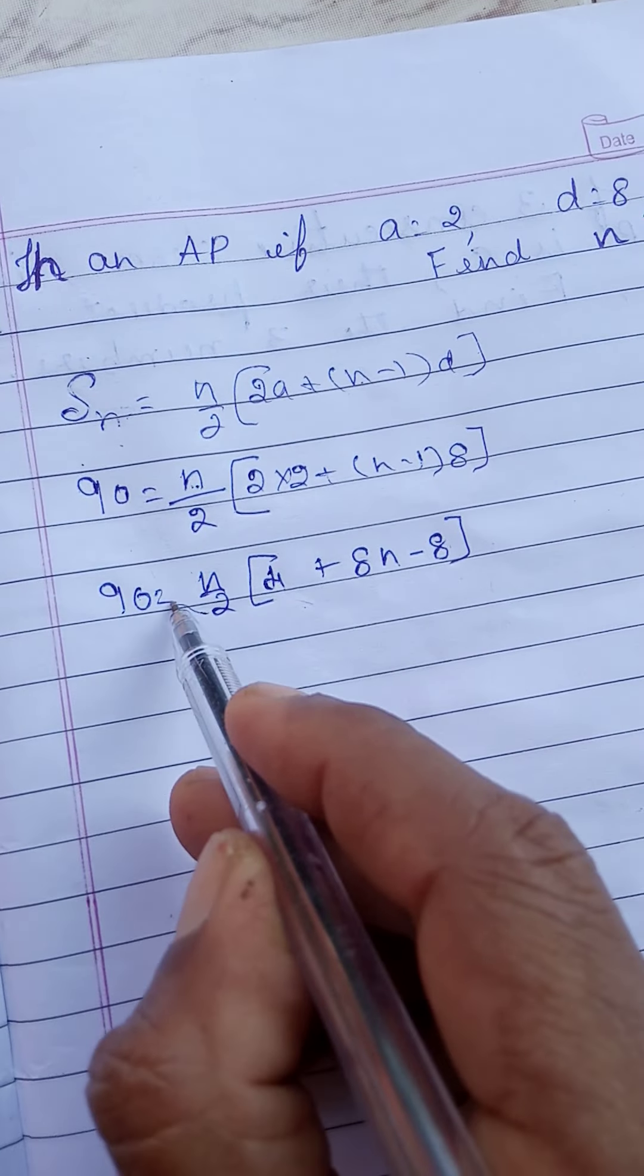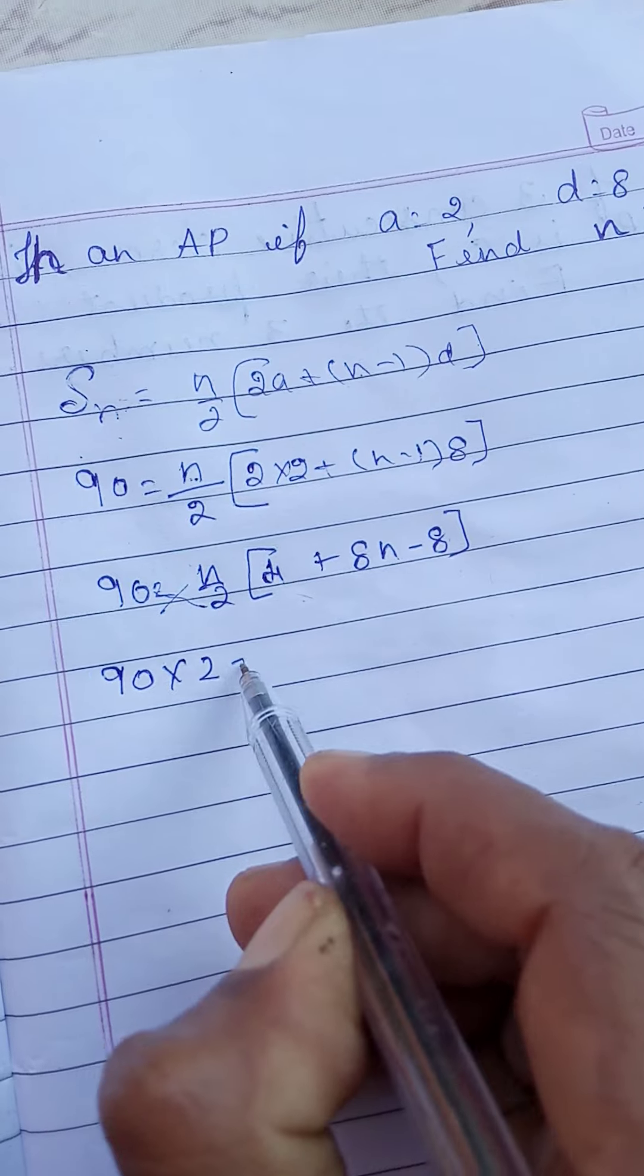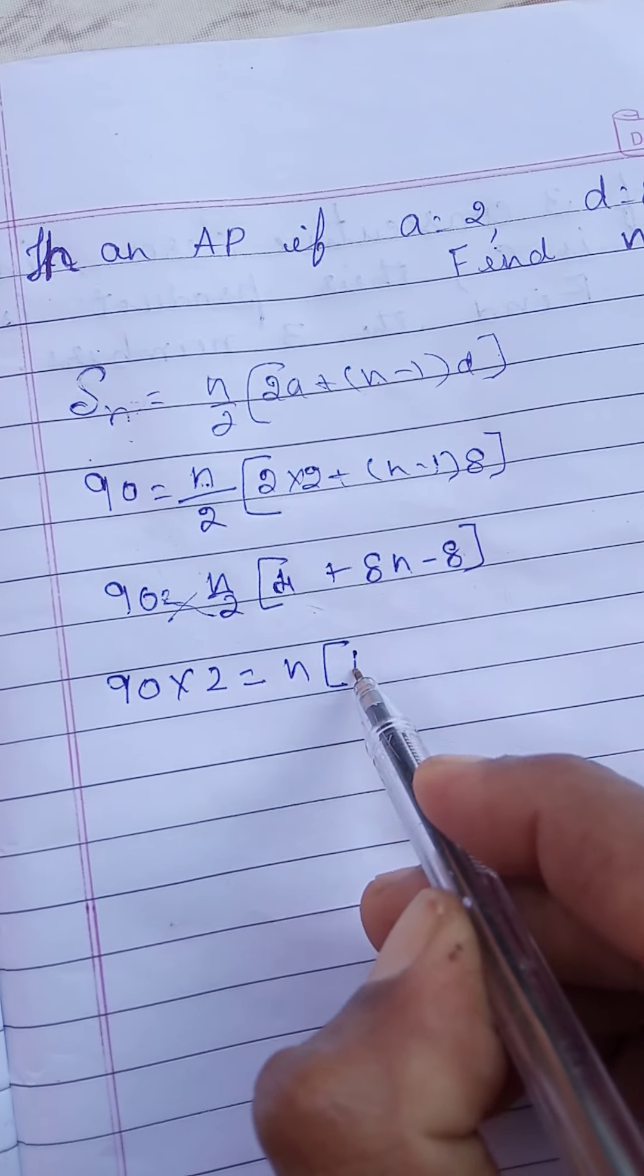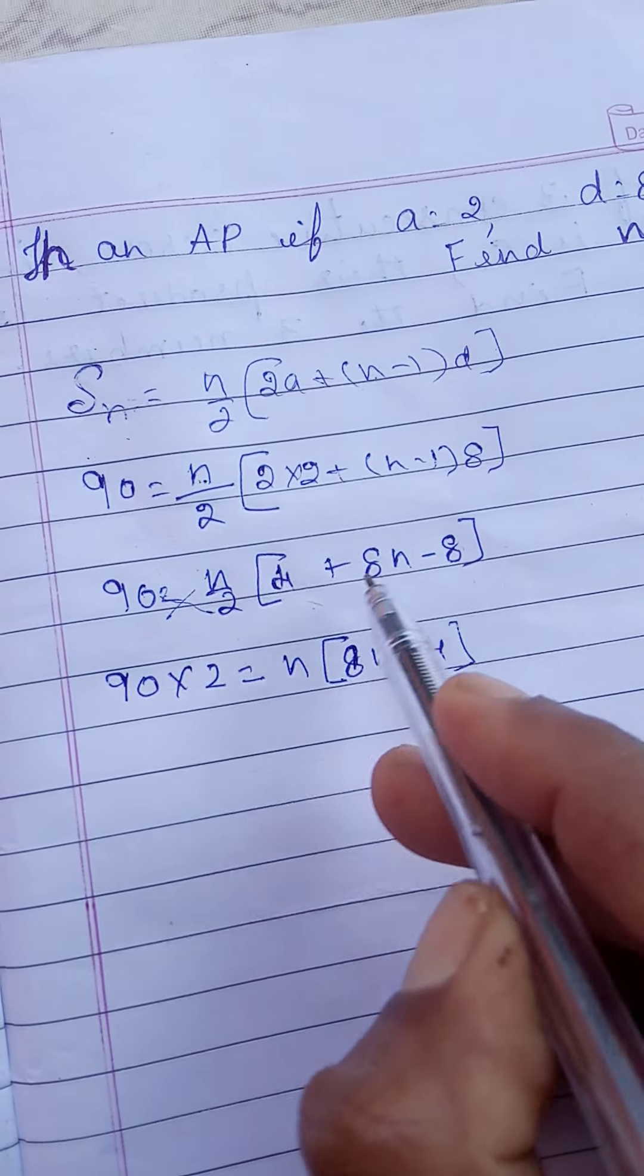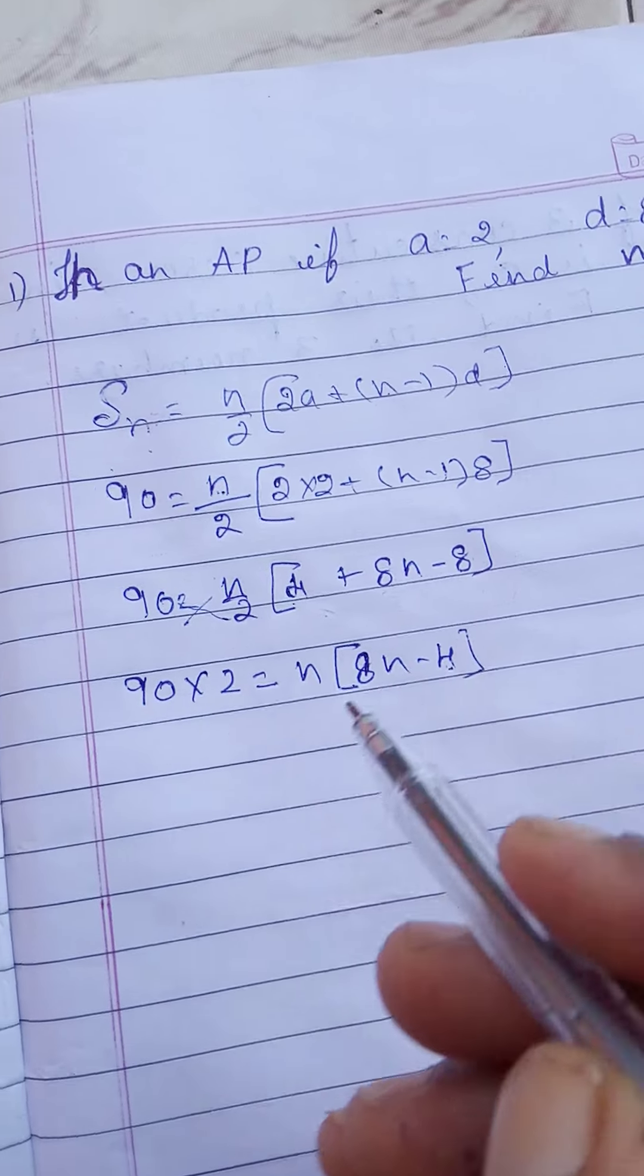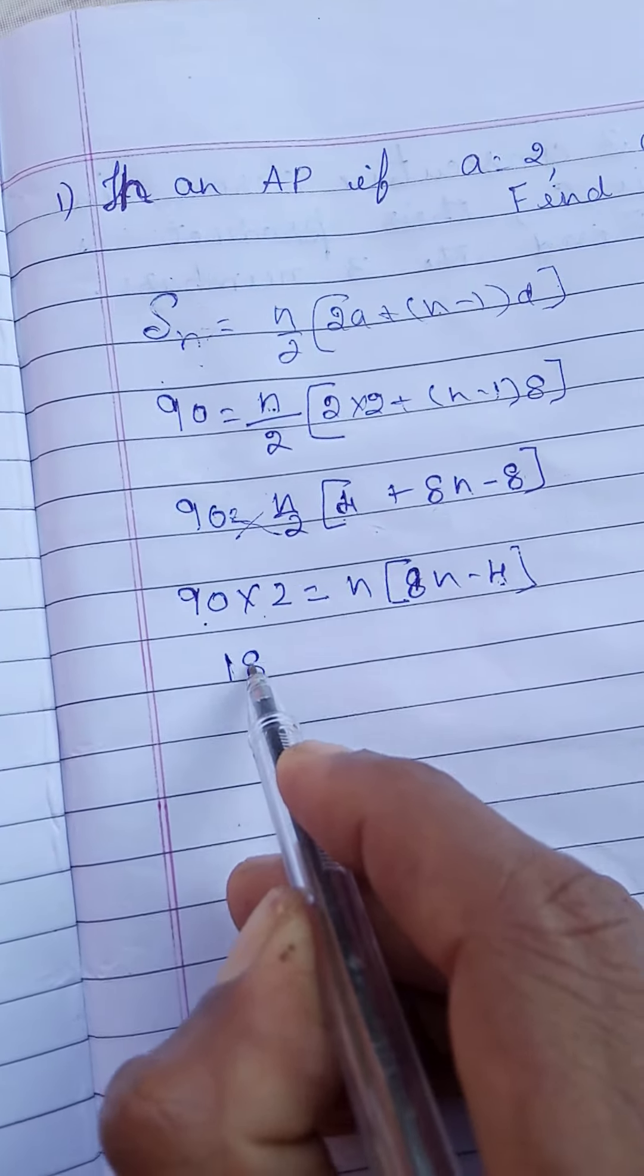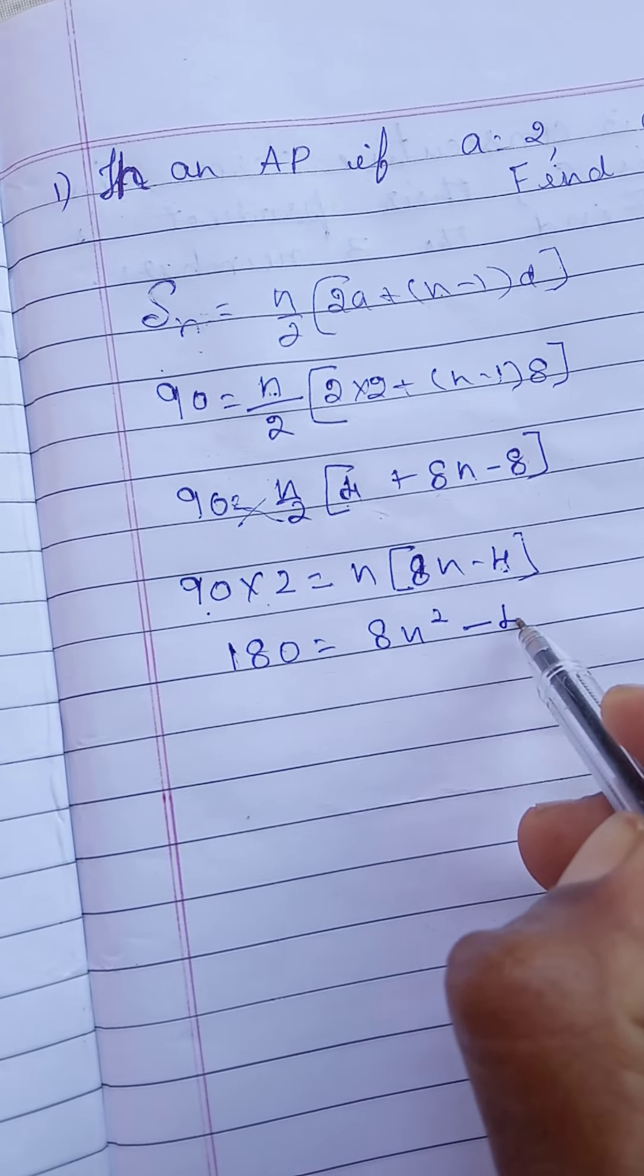Here we can do the cross multiplication. Means 90 into 2 is equal to n into 8n minus 4. Minus 4 means minus 8 plus 4 minus 4. 90 into 2 is 180. 180 is equal to 8n square minus 4n.